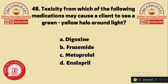Question 48: Toxicity from which of the following medications may cause a client to see a green-yellow halo around lights? A. Digoxin, B. Furosemide, C. Metoprolol, D. Enalapril. Digoxin toxicity will cause a client to see a green-yellow halo around lights. The answer is A.